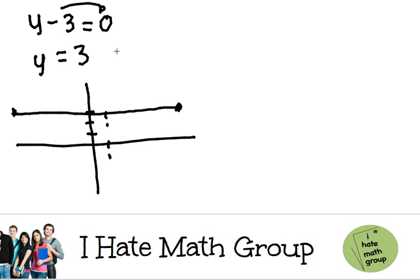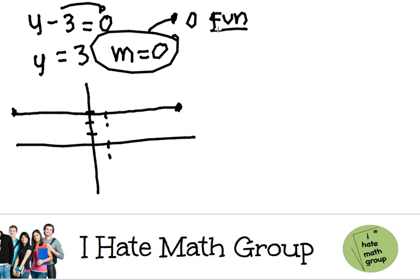Also, when you have a line like this, the slope is equal to 0. I always remember, the slope is just the inclination of the line. So I think of 0 fun. This is when you are on a roller coaster and you have no fun.